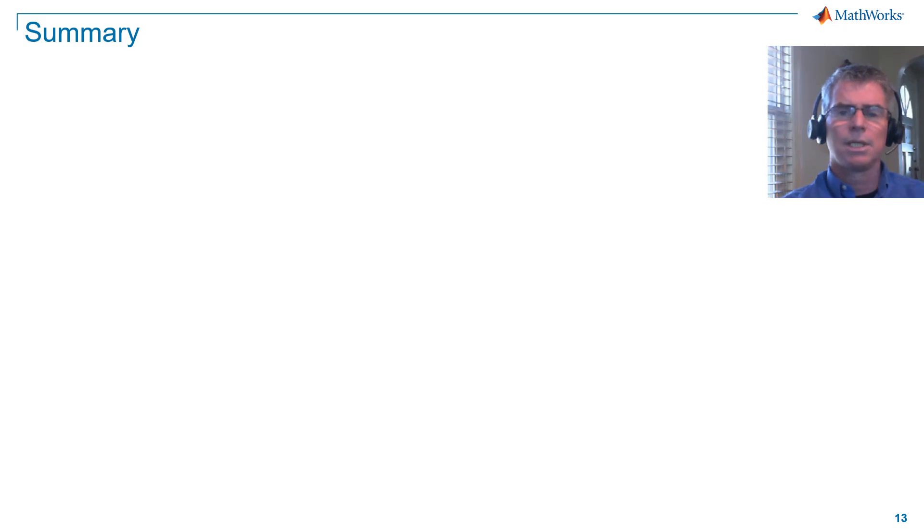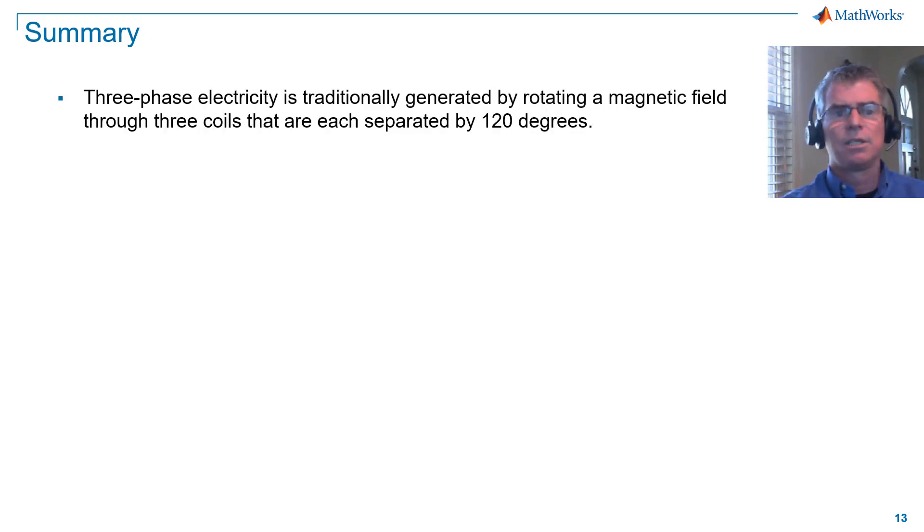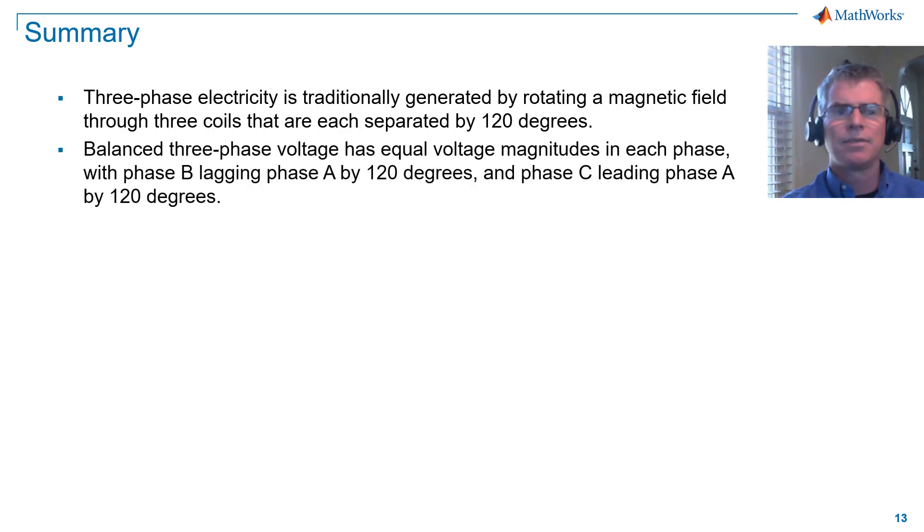In summary, three-phase electricity is traditionally generated by rotating a magnetic field through three coils that are each separated by 120 degrees. Balanced three-phase voltage has equal voltage magnitudes in each phase, with phase B lagging phase A by 120 degrees and phase C leading phase A by 120 degrees.